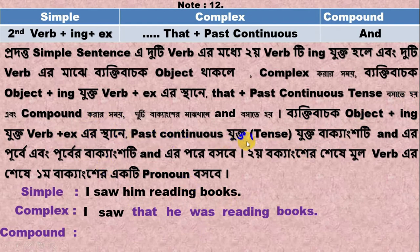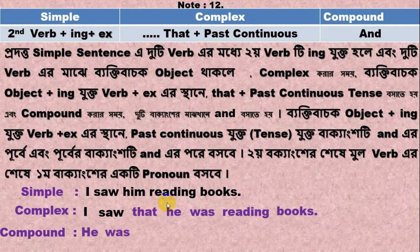'Him reading books' is converted to past continuous tense. We write it as 'he was reading books.' So the result is 'he was reading books' in past continuous tense.